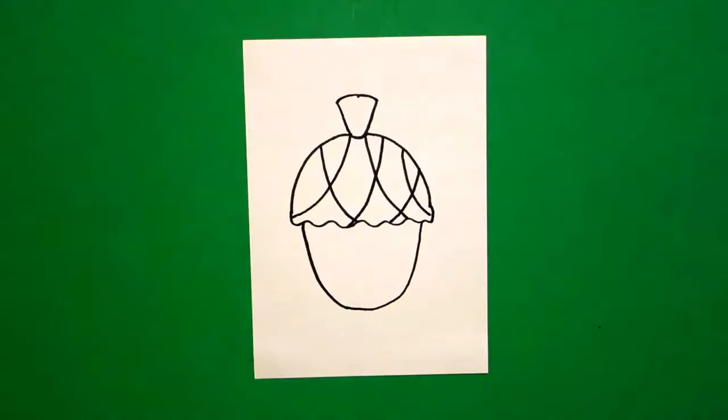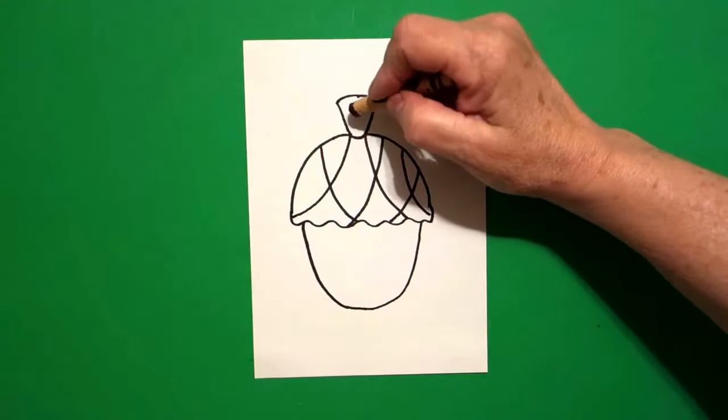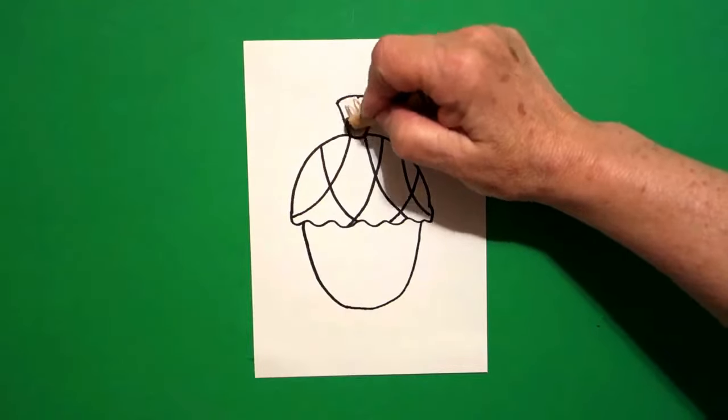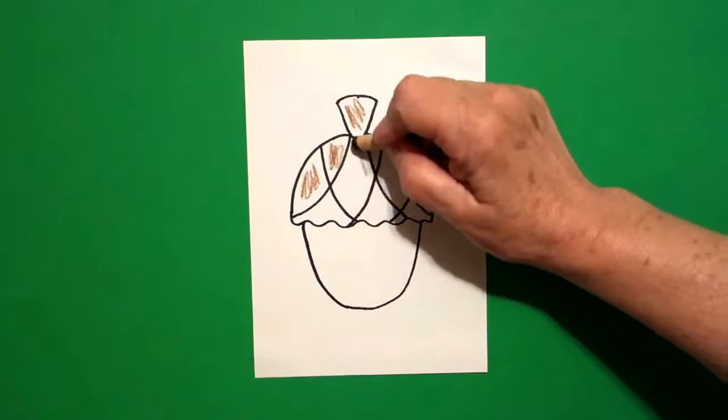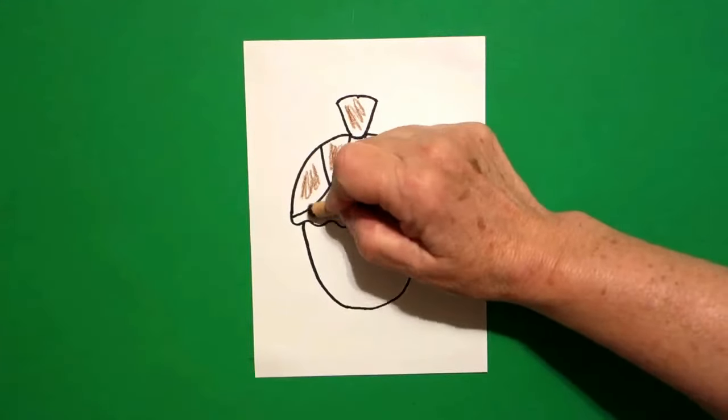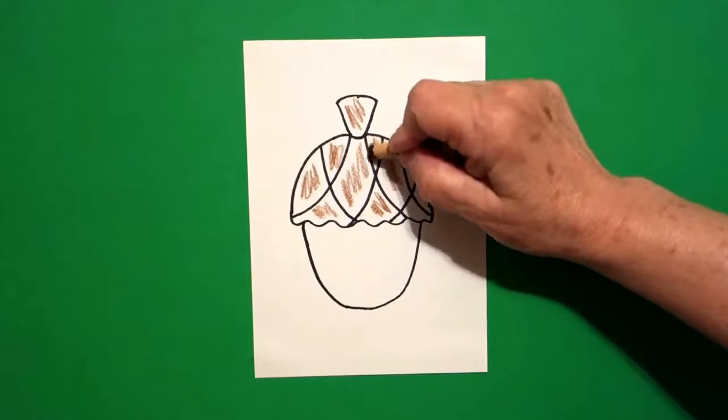Okay, now we're ready to color. If you have different color browns, that's great because we can use different ones. But if you don't, just use your regular brown with light and dark shading. For the top section, all of these little spaces, I'm going to color dark brown, all the way.